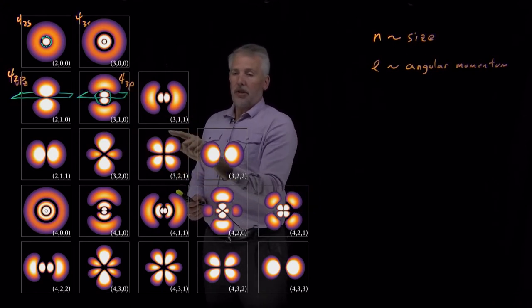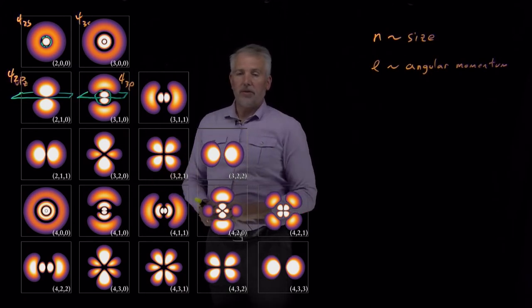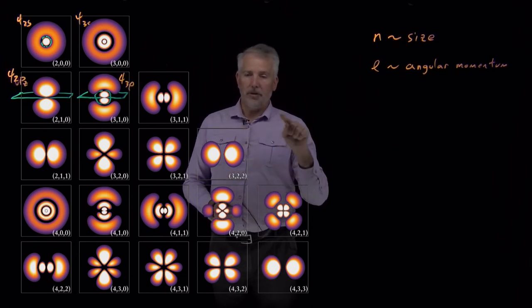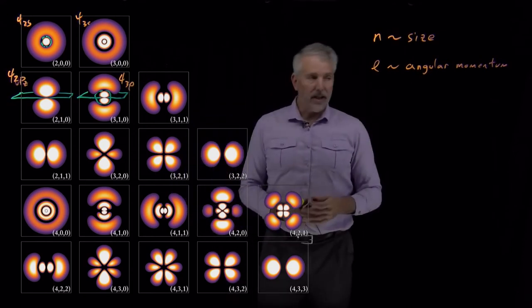In a d orbital, it'll oscillate from positive to zero to negative to zero more often as it goes around each value of theta. So the larger the value of l, the larger the wave function, the more the wave function is oscillating in theta and the more angular nodes that get introduced.